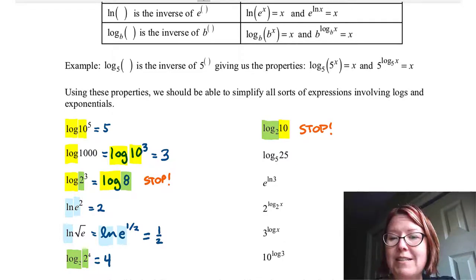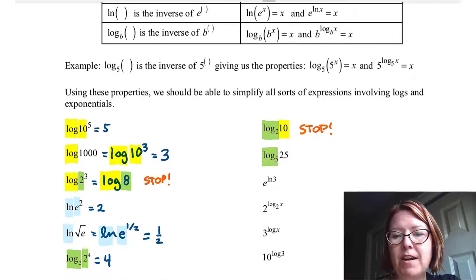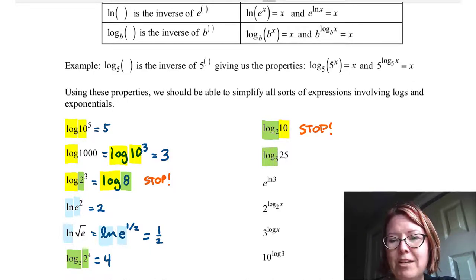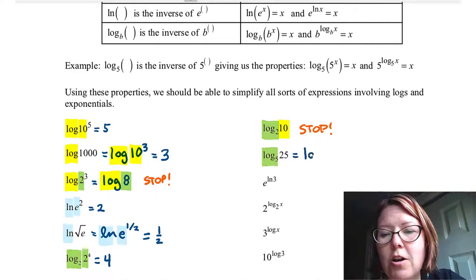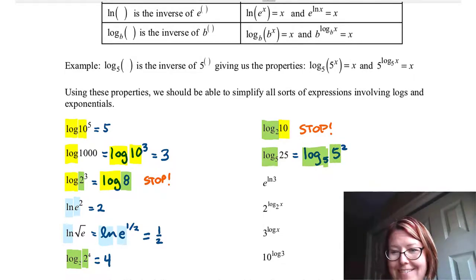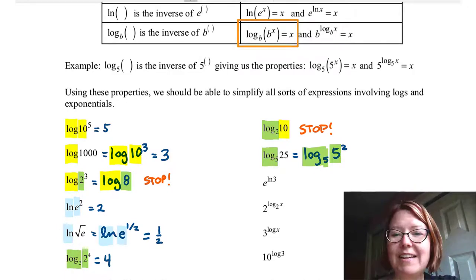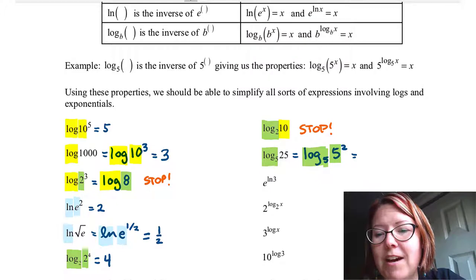How about log base 5 of 25? Log base 5 is base 5 and 25 doesn't match base 5, but we could rewrite it. Let's write this as log base 5 of 5 squared. Now log base 5 has a base 5 and 5 squared has a base 5. We apply log base b of b to the x equals x, and log base 5 of 5 squared equals 2.